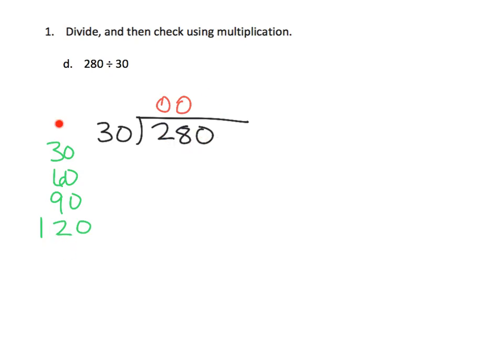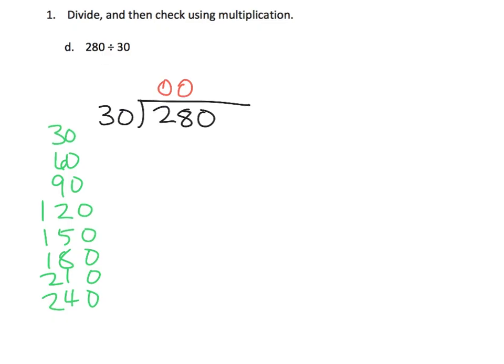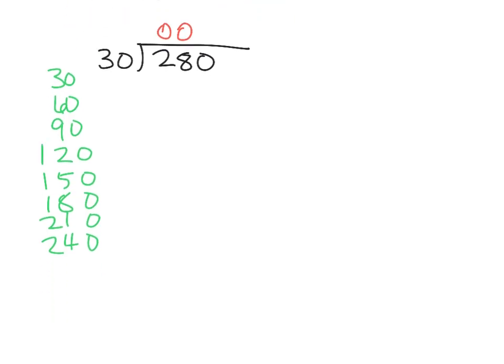So we're skip counting by 30: 150, 180, 210, 240. Oh my goodness, I'm running out of room. 270, 300. So we found our value, the best we can get, the closest we could get to 280 without going over.